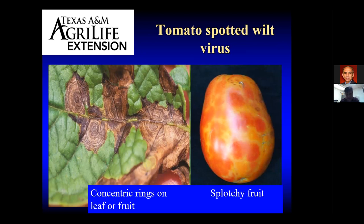The very concentric rings are characteristic of the tomato spotted wilt virus. Maybe you won't always get rings on the fruit, but you will get splotchiness — the fruit didn't develop correctly. That's probably what a gardener observes first: the tomatoes were all splotchy and didn't develop correctly. You'd want to get a diagnosis of what actually caused it, but one culprit would be tomato spotted wilt virus.